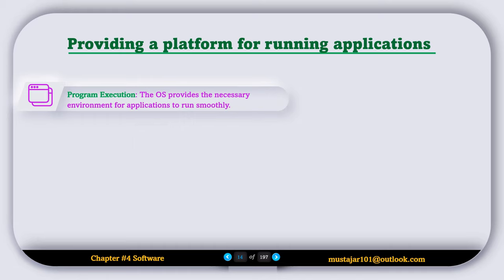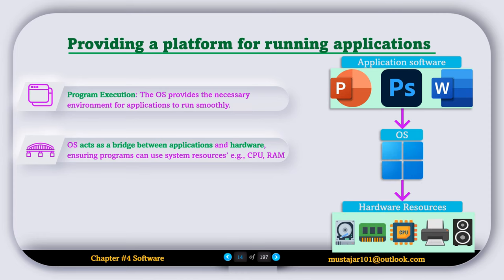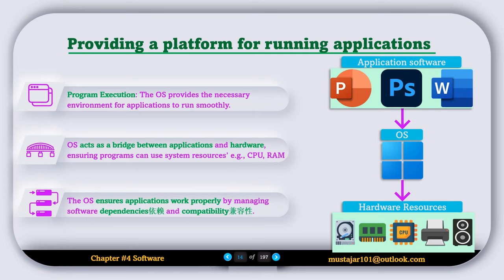The next operating system feature is called providing a platform for running applications. It is the job of the operating system to provide the necessary environment for applications to run smoothly. It acts as a bridge between the application and the hardware, ensuring programs can use system resources such as the CPU, RAM, and hard disk. The operating system also ensures applications work properly by managing software dependencies and compatibility. As shown in the picture, application software runs on top of the operating system, which runs on top of the hardware, so whenever an application needs a hardware resource, it requests the operating system to fulfill that request.